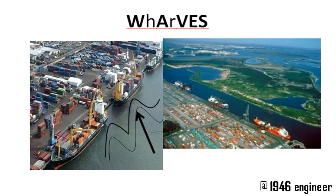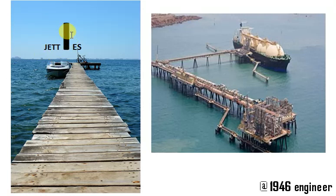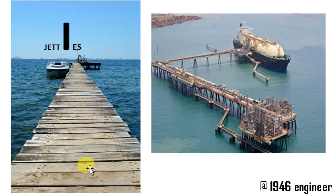Here is the tip: waves normally come parallel to the port or the shore — similarly, wharves are also parallel to the shore or port. For jetties, consider an 'I' kind of projection — a jetty is that perpendicular 'I'-shaped projection from the port or harbour. Jetties also have an added advantage: they give protection to the beach from longshore drifting currents.